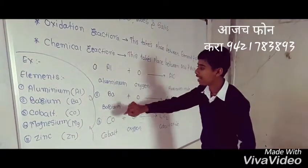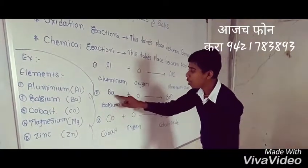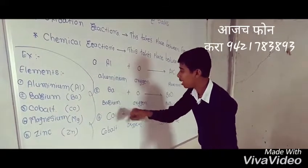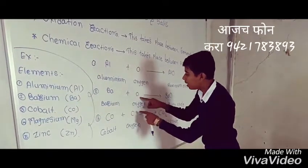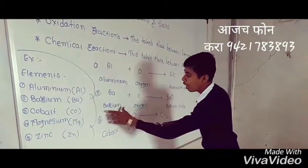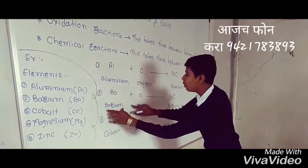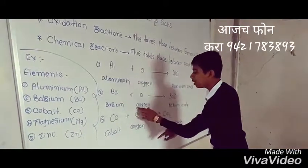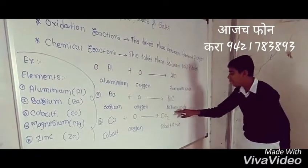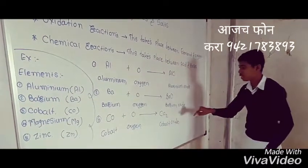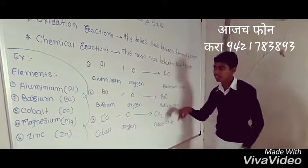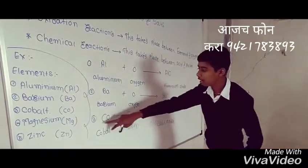Here is the second reaction. Ba means barium, and O means oxygen. When barium reacts with oxygen, we get barium oxide, which means BaO.